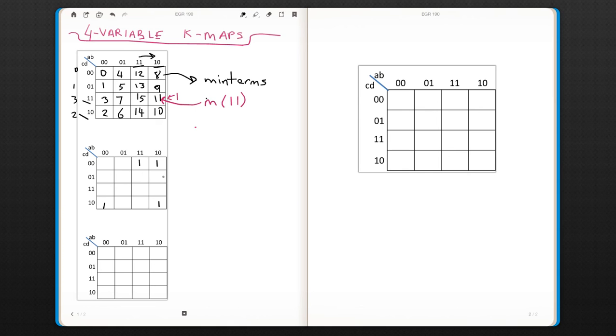So again, we need to look for the adjacent terms. And as you see here, these two are next to each other. We can take these, and this is going to be: A is not changing, so I'll take A, which is 1, then I'm not going to put a complement here. B is changing, so B is going to be eliminated. C and D are not changing, and they are 0. So this is going to be C', D'.